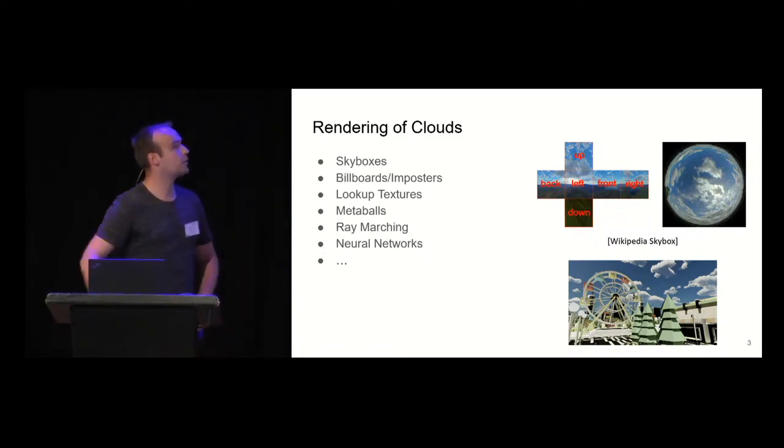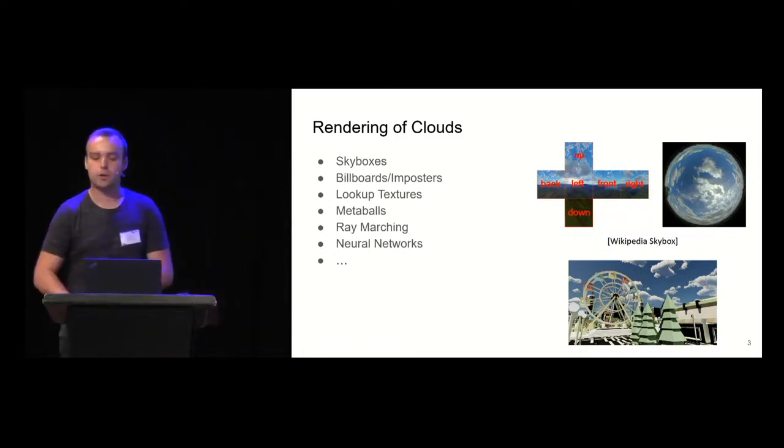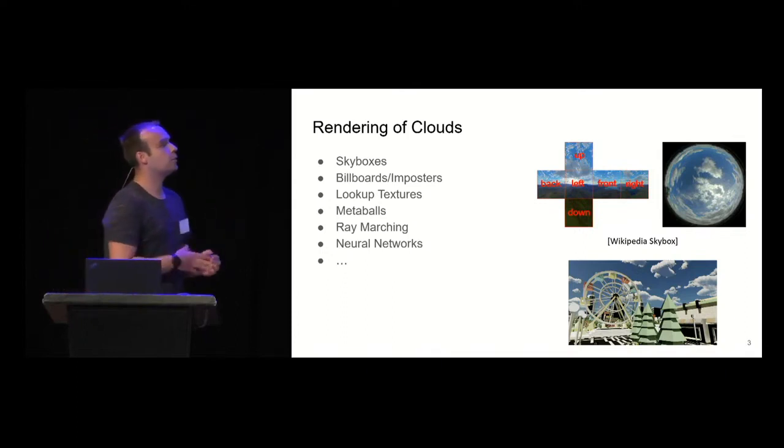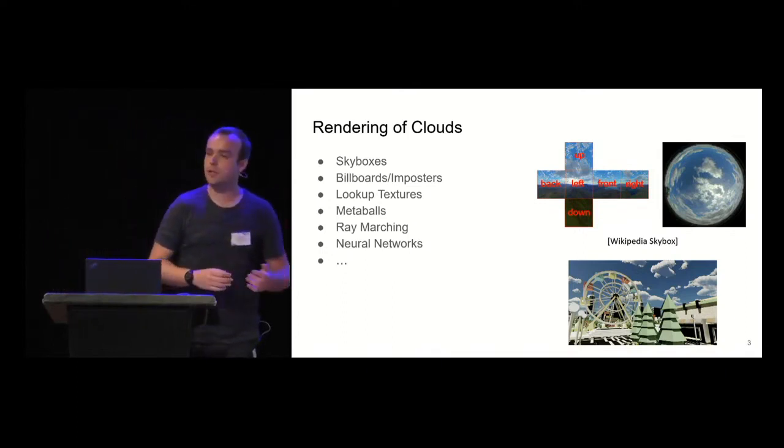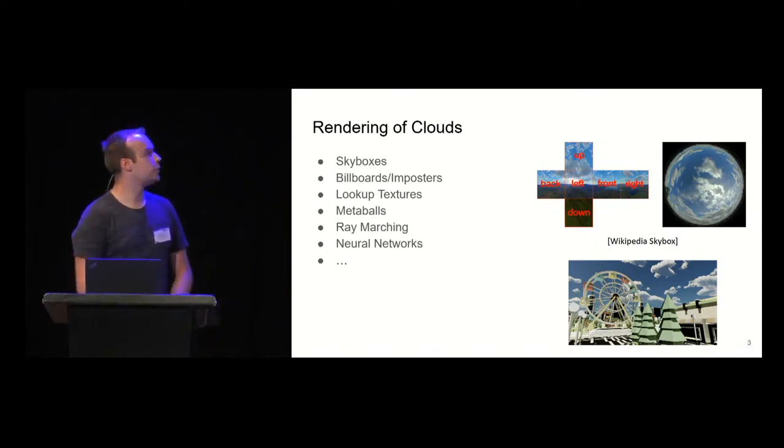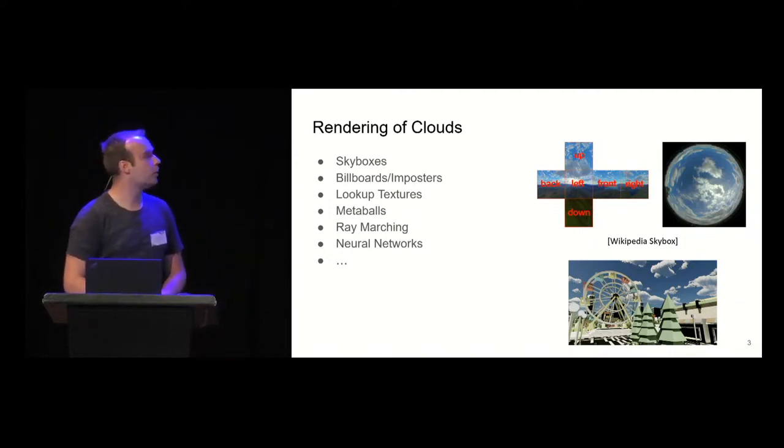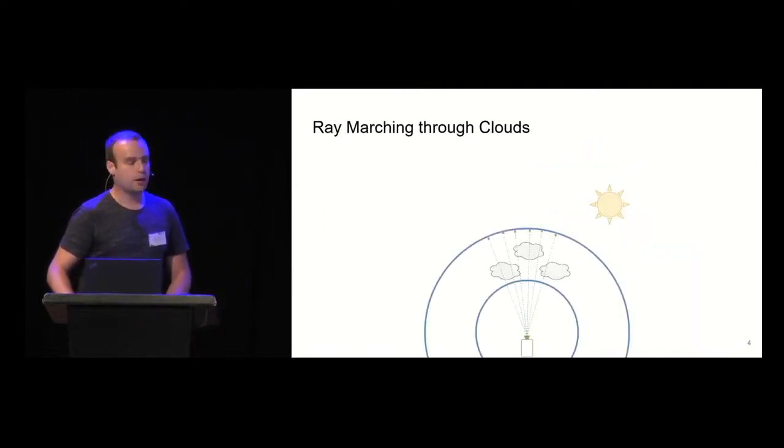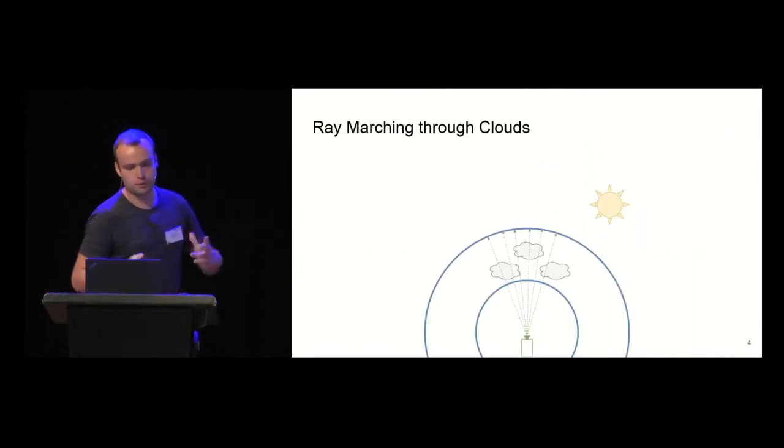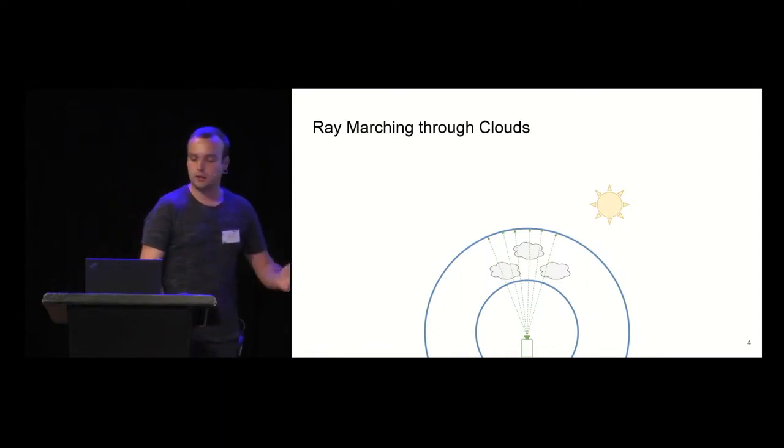The simplest approach are probably skyboxes where you have just pre-rendered images. Probably all are familiar with those, come in different flavors like cube map texture or spherical mapped images. Then with more dynamic approaches like billboards and imposters, lookup tables, metaballs. Recently there was a surge, especially in AAA production and real-time games, of ray-marching-based approaches. And also recently there are some neural networks which still don't work in real-time. In our work and also in this talk, we mostly care about ray-march-based approaches. In theory our caches work with other techniques as well.